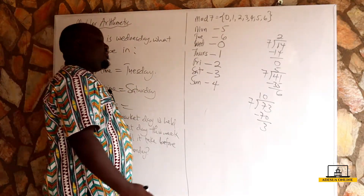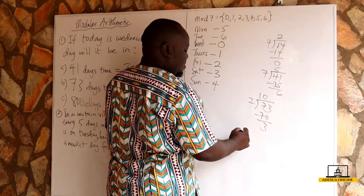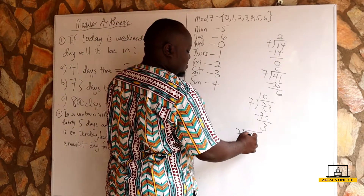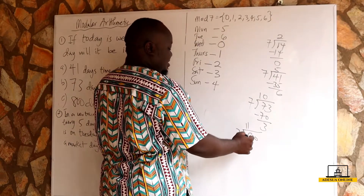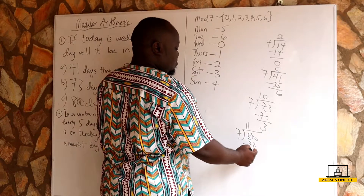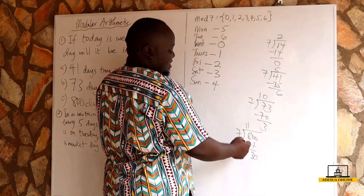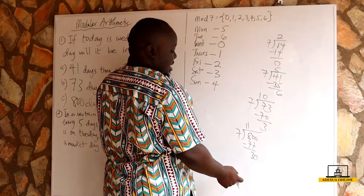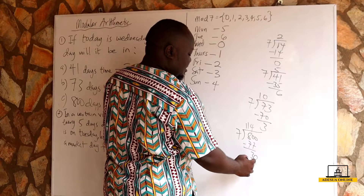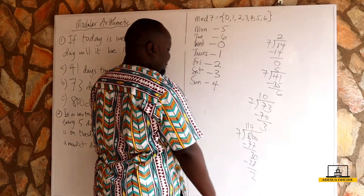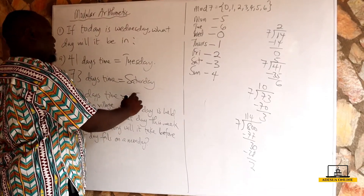For 800 days time, again we divide 800 by seven. Seven goes into 800 approximately 114 times — 114 times 7 is 798 — giving a remainder of two. A remainder of two tells us it will be on a Friday.